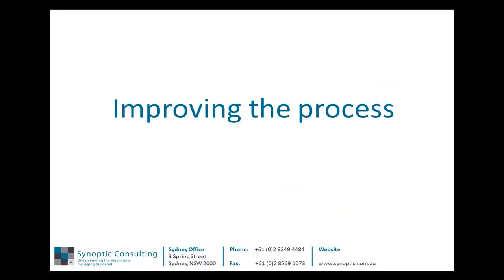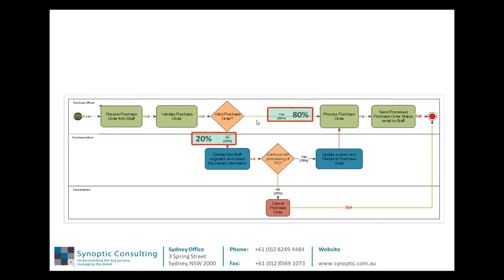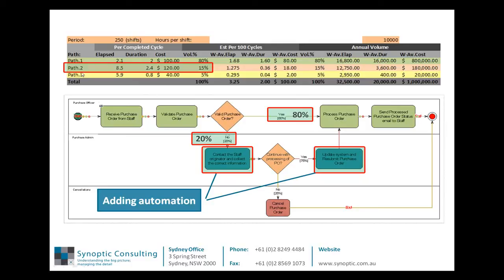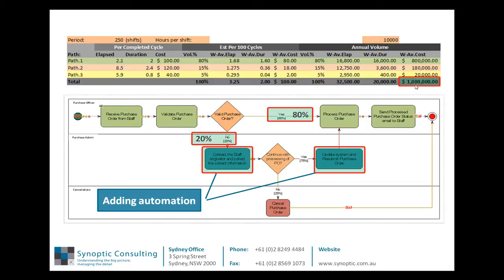Let's look at the improved process. Two things to consider: first, we have influenced the volume by moving it up from 60% to 80% through path one. Second, these were previously quite laborious manual tasks — we've sped them up dramatically by adding some automation, perhaps some workflow to assist those steps. Running the analysis, we can see that the problematic path two is now only 15% of the volume and the cost has dropped dramatically from $200 to $120. The duration has come from two and a half hours down to two hours, and the elapsed time has plummeted from 14 hours to around three hours, which drives customer service. The average cost per iteration is now $100, and at an annualised volume of 10,000, the annual cost of the process is $1 million.